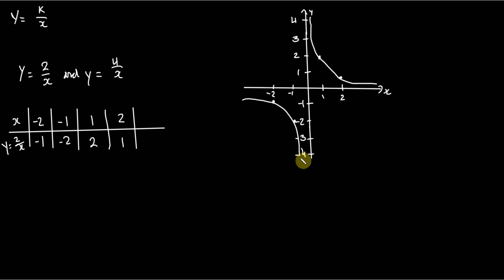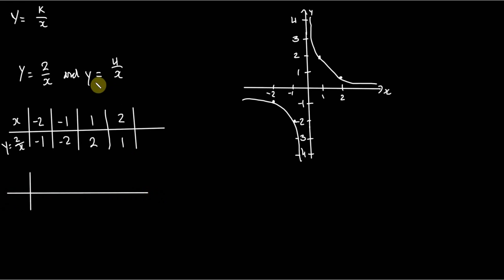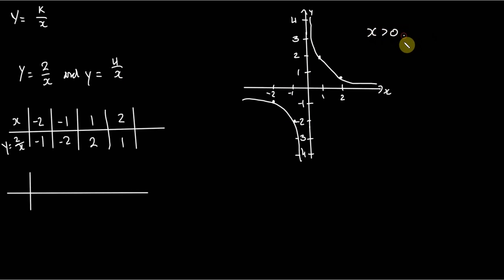When it comes to y equals 4 over x, the main thing to discern is how the graph is going to position itself relative to y equals 2 over x. Well, y equals 4 over x is going to be larger - because this is type 1, when x is greater than 0, 4 over x is going to be greater than 2 over x, because 4 is greater than 2.